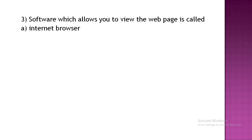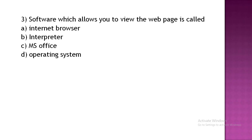Software which allows you to view web pages — Option A: browser. Option B: interpreter. Option C: MS Office. Option D: operating system. The correct answer is Option A, browser.